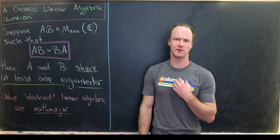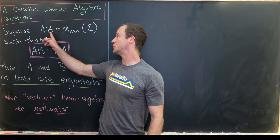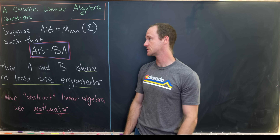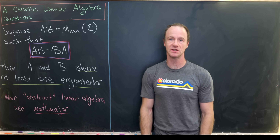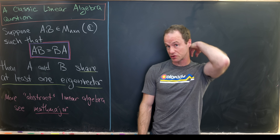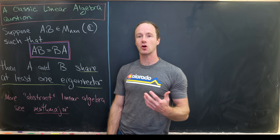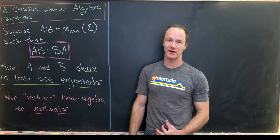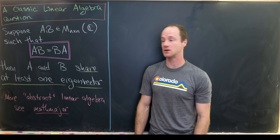Today I've got a nice classic problem from linear algebra. We start with two n-by-n matrices with entries in C, the complex numbers, and we suppose that those matrices commute — in other words, AB equals BA. This is in general not true for matrix multiplication. Our goal is to show that A and B share at least one eigenvector, and we'll review what it means to be an eigenvector along the way.